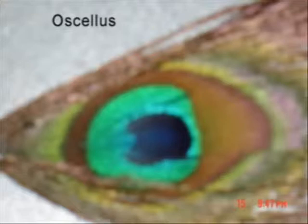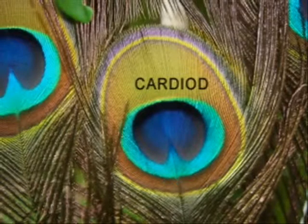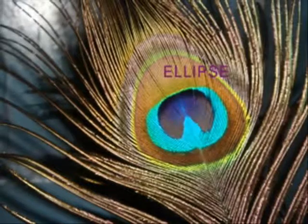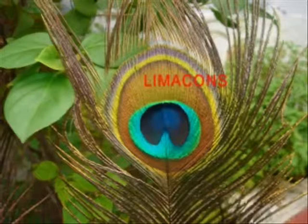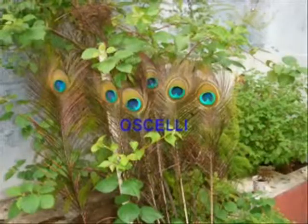This object in a peacock's tail that looks like an eye is called an ocellus. Let's look at some mathematical graphs. This is a cardioid, then it is surrounded by an ellipse, and the ellipse is surrounded by limaçons. The plural of ocellus is ocelli.